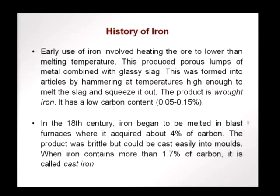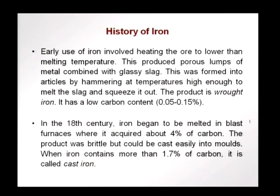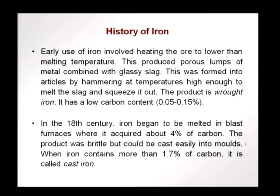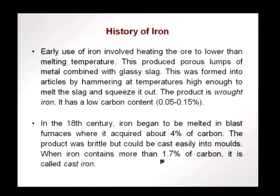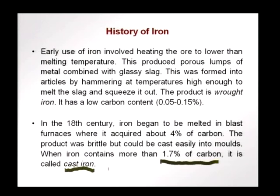Later came the technology of blast furnaces. In the 18th century, iron began to be melted in blast furnaces. In this process, it could acquire up to about 4% carbon. The resulting product was, however, brittle but could be cast easily into molds, so it was used for molding different elements used in engineering. Whenever we have iron with more than 1.7% carbon, we call it cast iron, which is more ready for casting applications than other hot working processes.